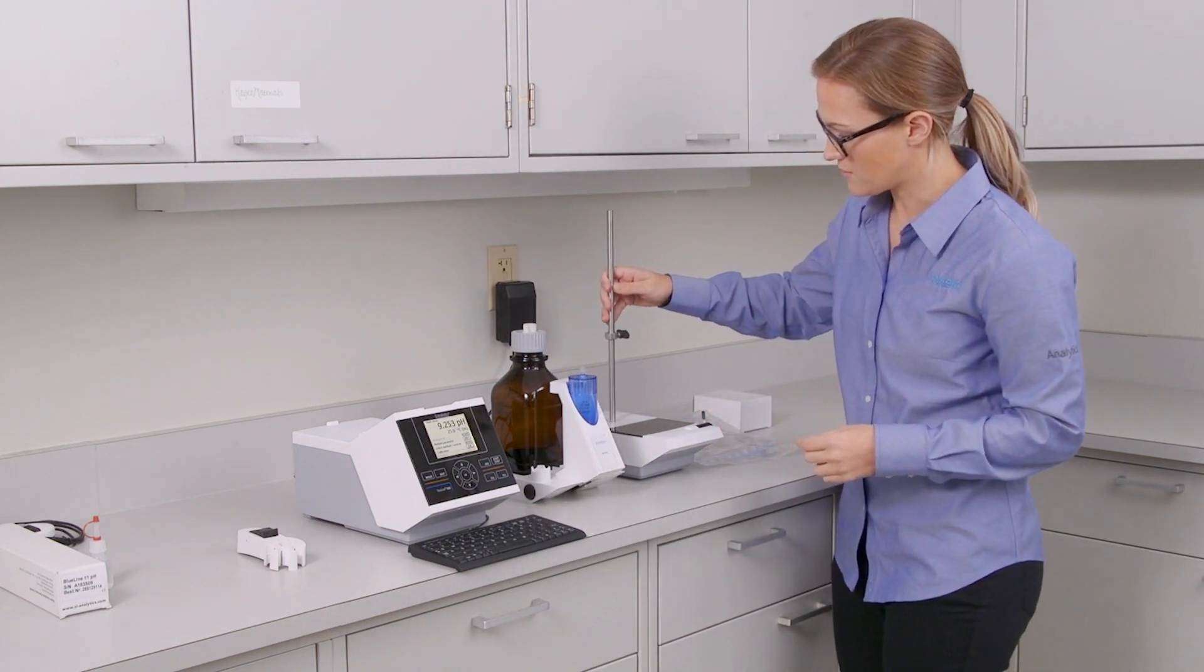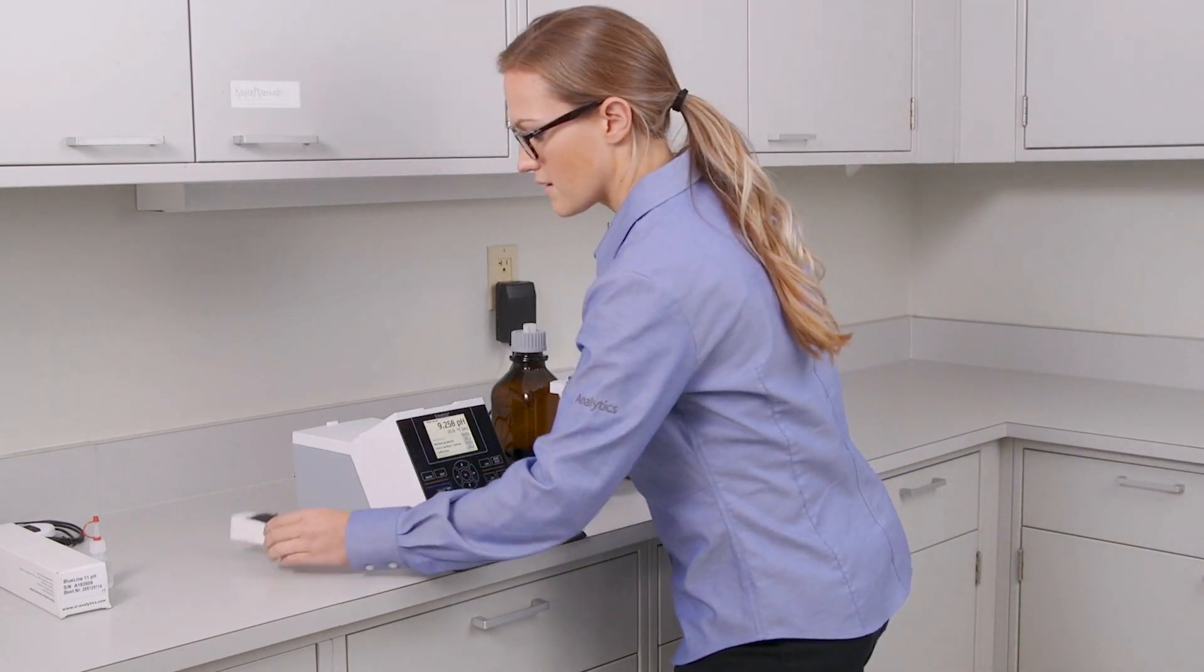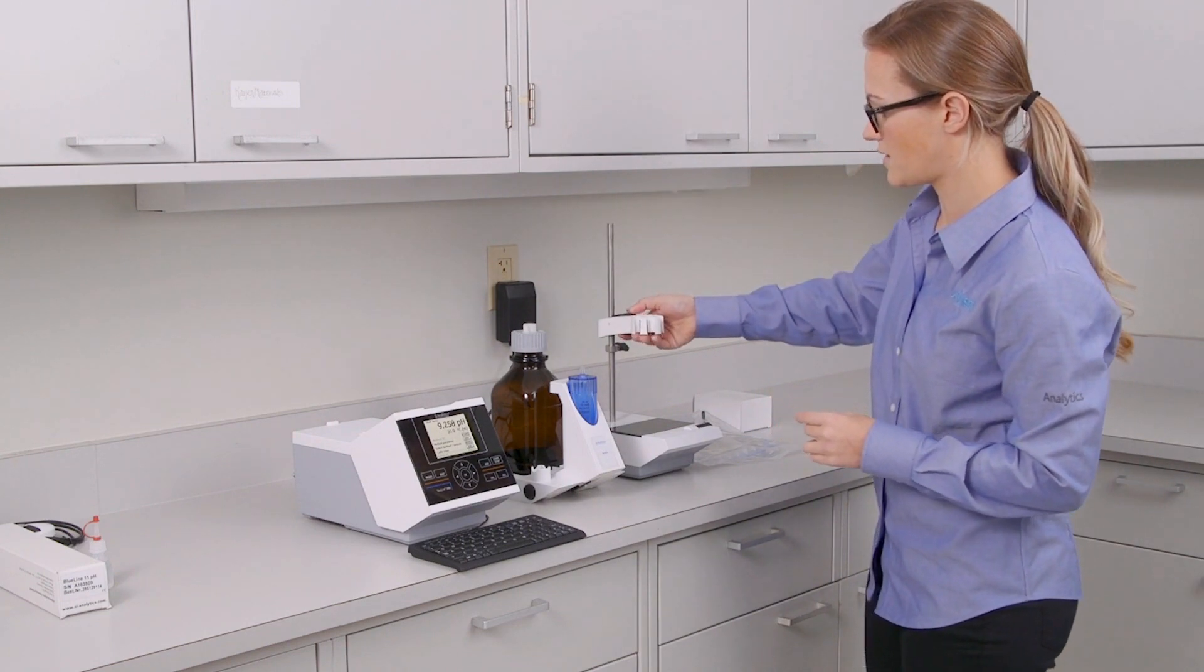Now you can take the stainless steel rod and put it on top of the stirrer and just thread it in. And then you can take your titration clamp and just lay it right down.